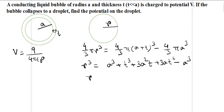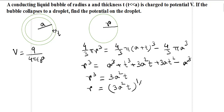The a³ terms cancel. Since t is very small, we neglect the t² and t³ terms, giving r³ = 3a²t, and therefore r = (3a²t)^(1/3). This is the expression for the radius of the liquid drop.